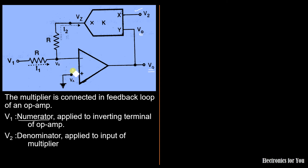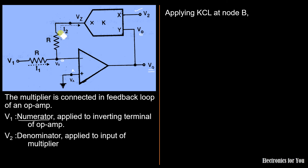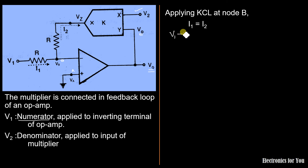For the derivation, we apply KCL at the node. Let this node be A and this node be B, with voltages Va and Vb respectively. Applying KCL at node B: the sum of incoming current equals the sum of outgoing current. Only I1 is going towards node B and I2 is leaving, so I1 equals I2. The input current is zero since we consider this an ideal op-amp. To find I1 and I2, we apply Ohm's law: V/R. The potential difference for I1 is V1 minus Vb, so I1 equals (V1 minus Vb) upon R.